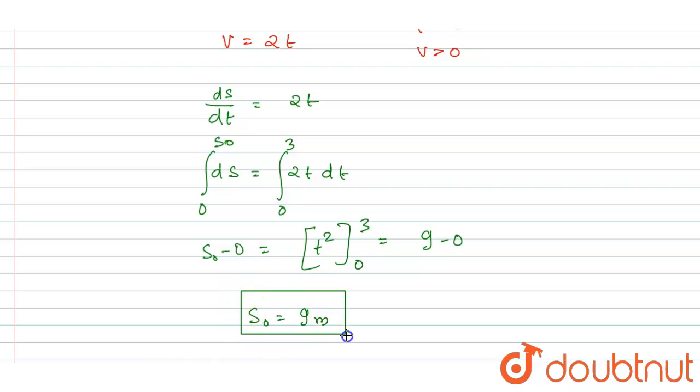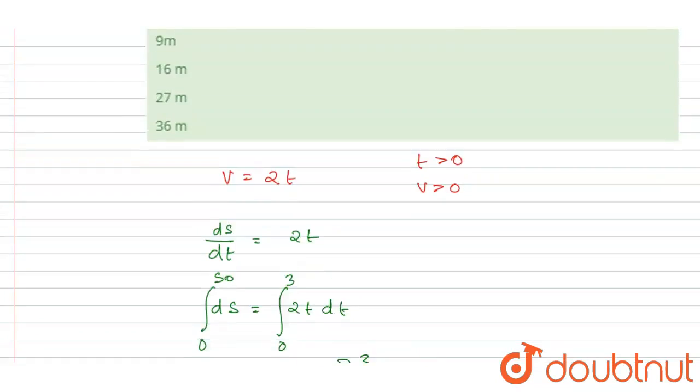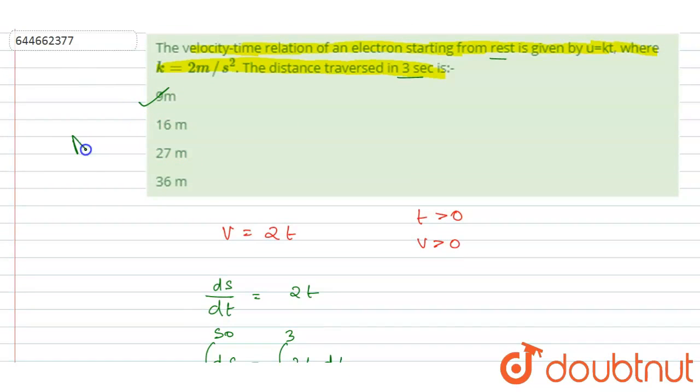So the distance traveled in this time interval is 9 meters. And this is the answer of this question. And if you see the option here, A will be the correct option.